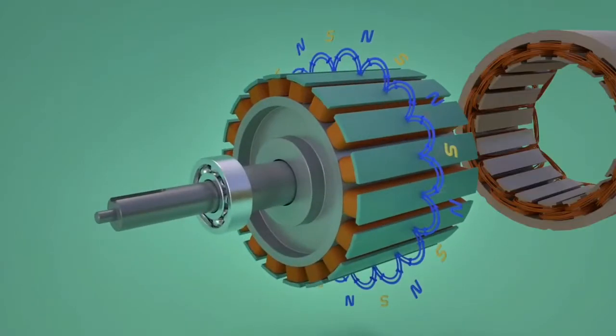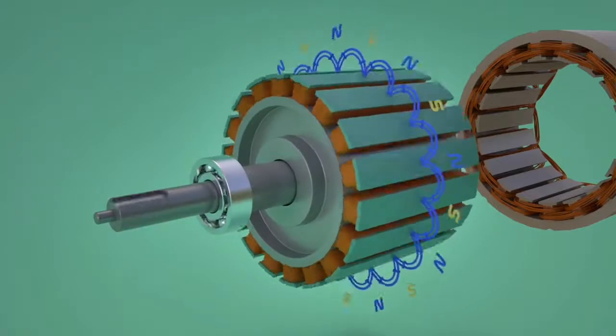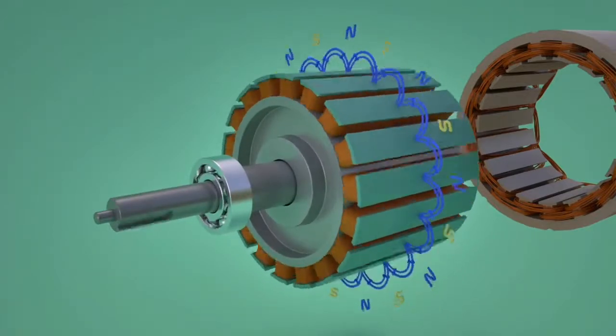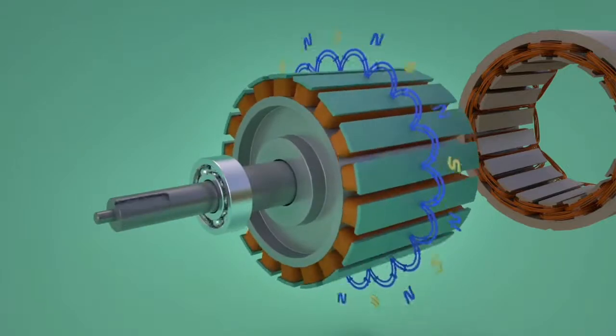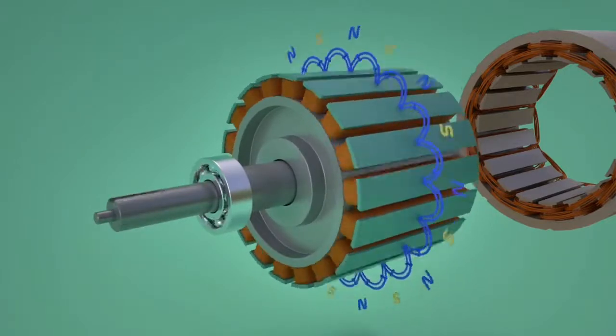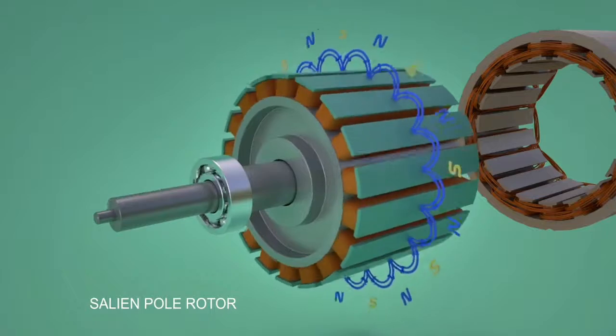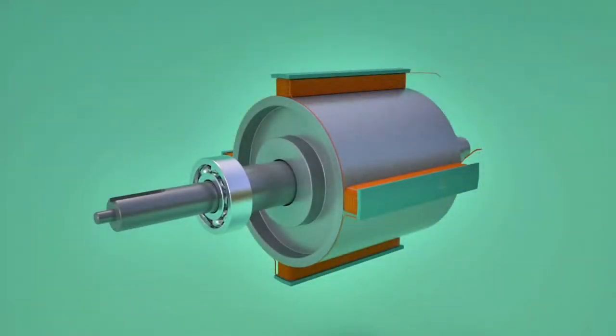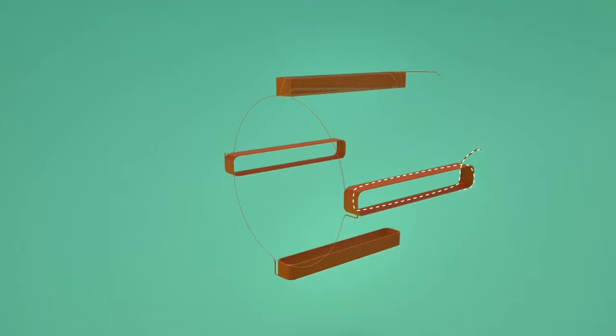Rotor produces a rotating magnetic field. Armature coils are stationary and rotating magnetic flux associated with the rotor induces electricity in the armature coils. For better understanding, let's consider a rotor with just four poles. Rotor coils are excited with a DC power source.